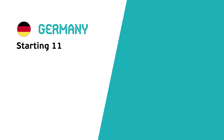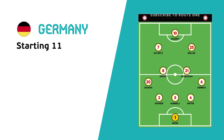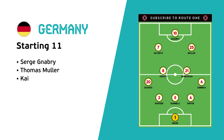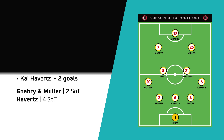The Germany 11 picks itself really. There was one change against Hungary with Sané starting for Müller, but I'd imagine Müller will be back in for a knockout match. In terms of the forwards — Gnabry, Müller, Havertz — only Havertz has scored so far with two goals this tournament. Gnabry and Müller have only had two shots on target between them while Havertz has had four, so he's definitely the forward in form to look out for.